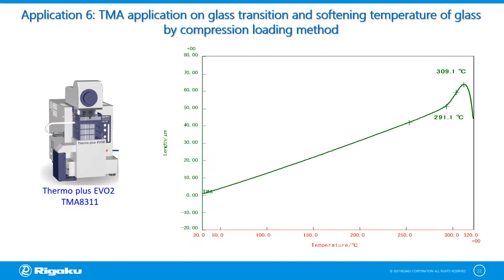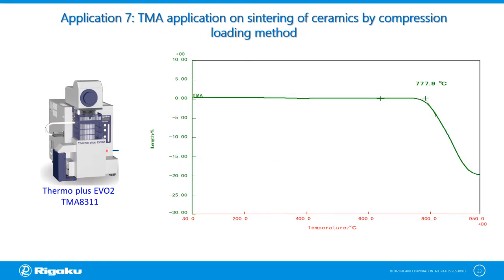Here is a TMA application on the glass transition and softening temperature of glass by compression loading method. The result shows an expansion curve with a slope change at 290 degrees centigrade due to glass transition. Then the sample shrinks with softening after glass transition, and the deformation point is observed at 309 degrees centigrade. This figure also shows the TMA compression loading measurement result of green ceramics, with shrinkage at 778 degrees centigrade due to sintering. A shrinkage of 20 percent is observed until 950 degrees centigrade, indicating the completion of sintering. With the TMA, the onset and end-set temperatures of sintering and shrinkage at each temperature can be analyzed.